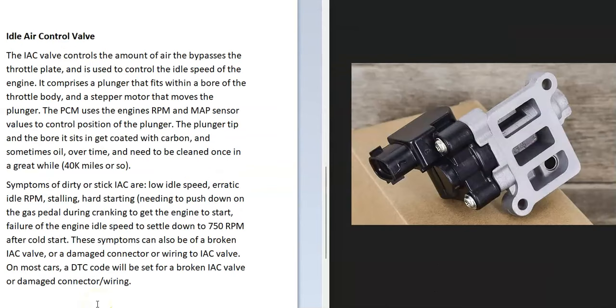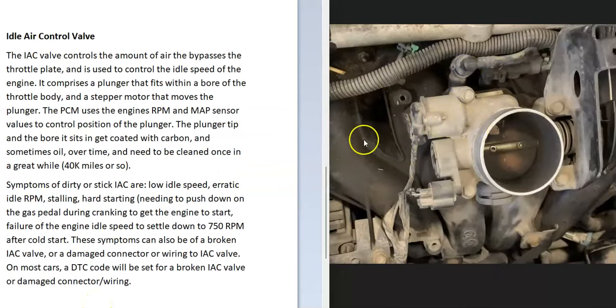The next thing to check is going to be the idle air control valve. This will be located right on the side of the throttle body and it helps control the idle speeds, so it's definitely something to check out. Be sure to check out the wiring and everything like this.